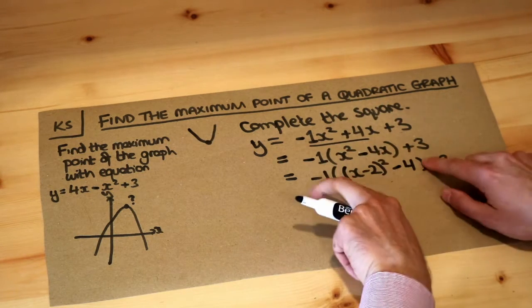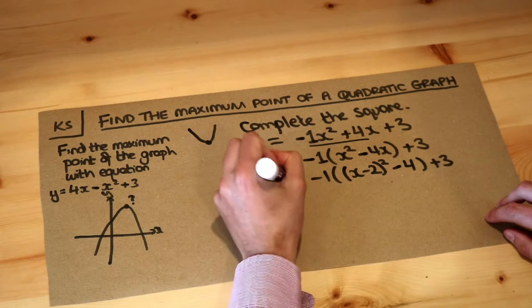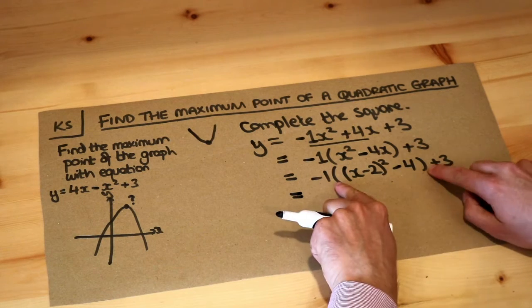So we complete the square inside this bracket, so we have a bracket within a bracket. And then the final step is to expand out this outer bracket.